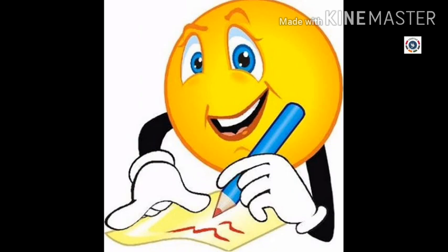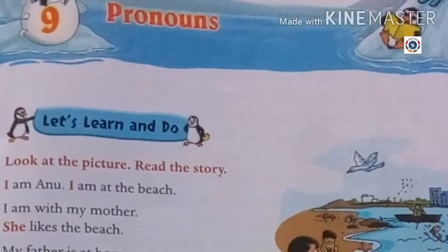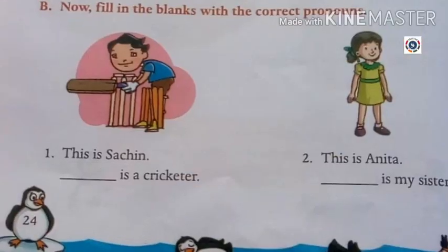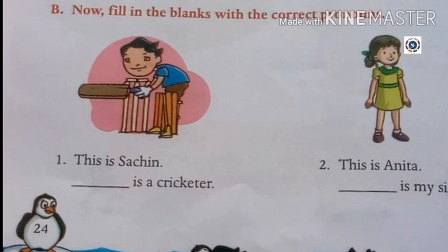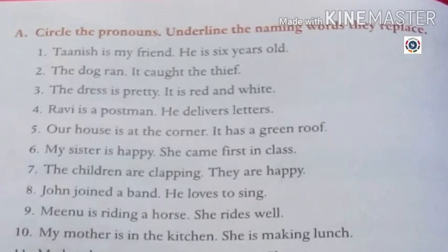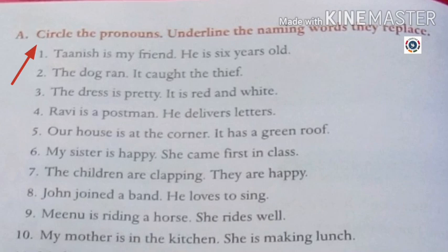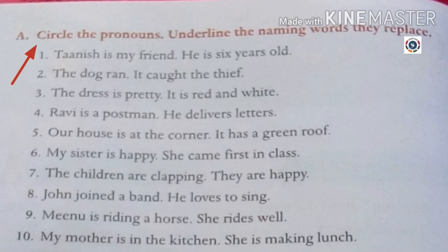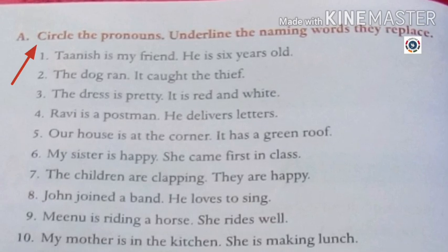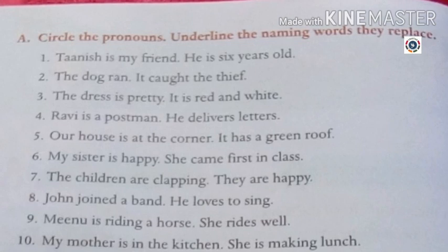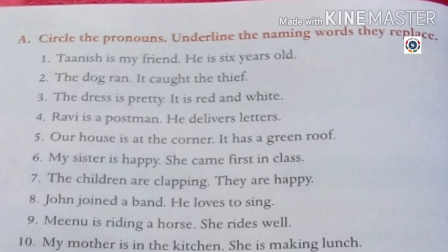Now it is time to do the practice. Shall we do this? Yes, let us start. Take your Grammar Champ book. The pronoun topic is given on page number 23, and the exercises are given on page number 24. Now take page number 24 and read the first exercise — it is Exercise A. Circle the pronouns and underline the naming words they replace. In the exercise, circle the pronouns and underline the word being replaced.